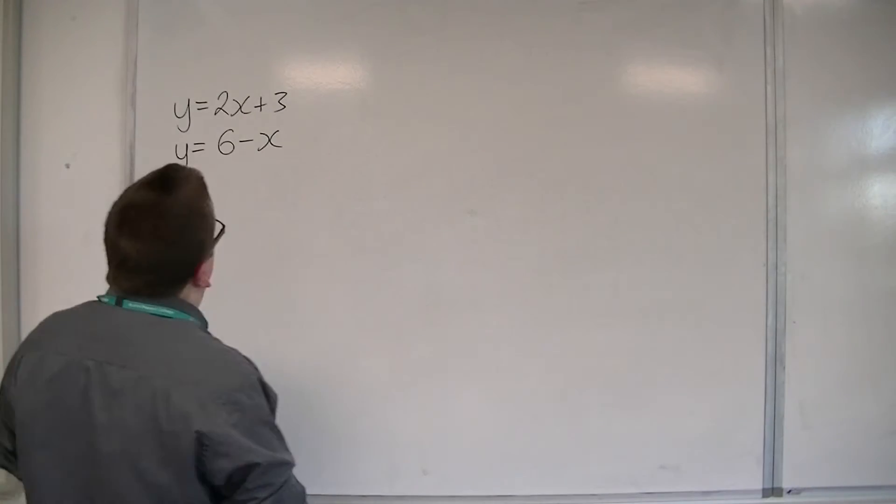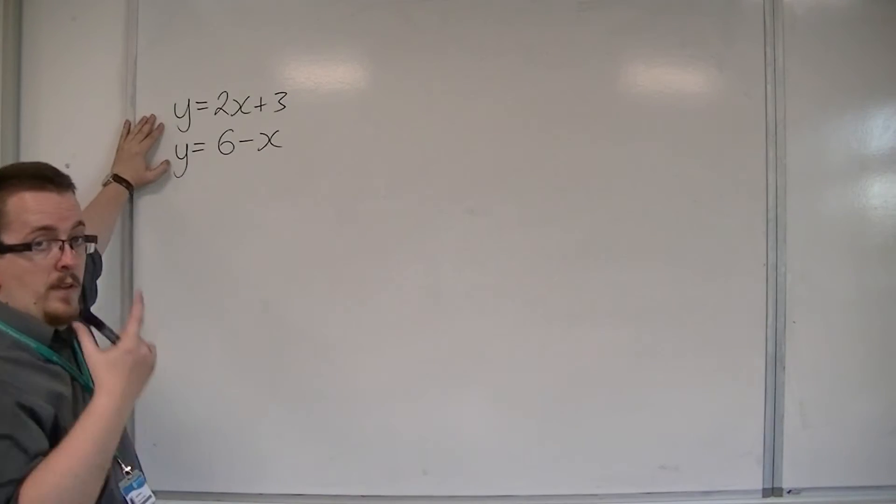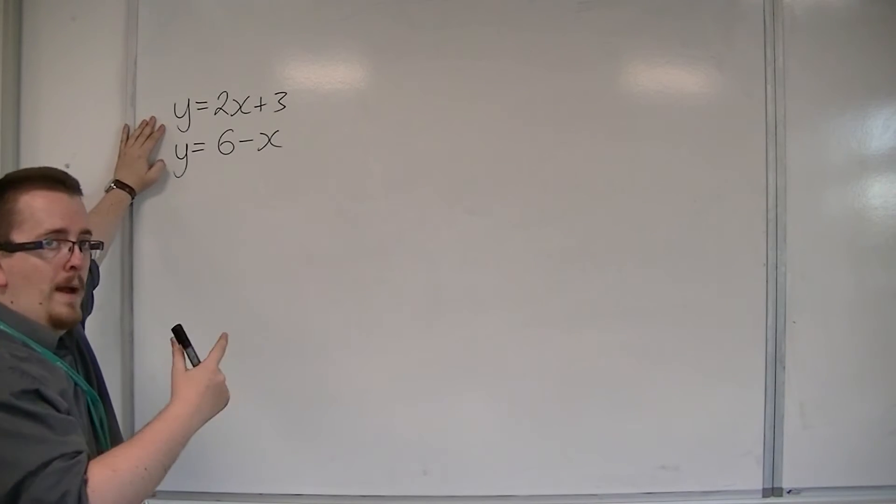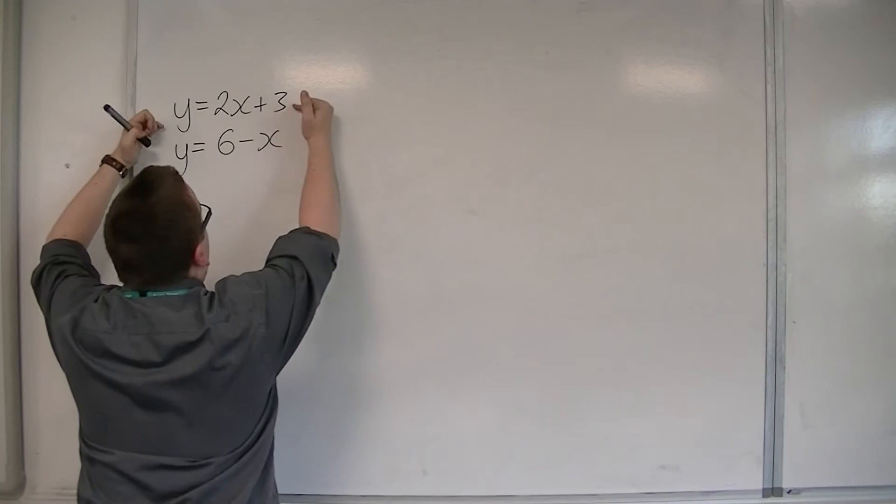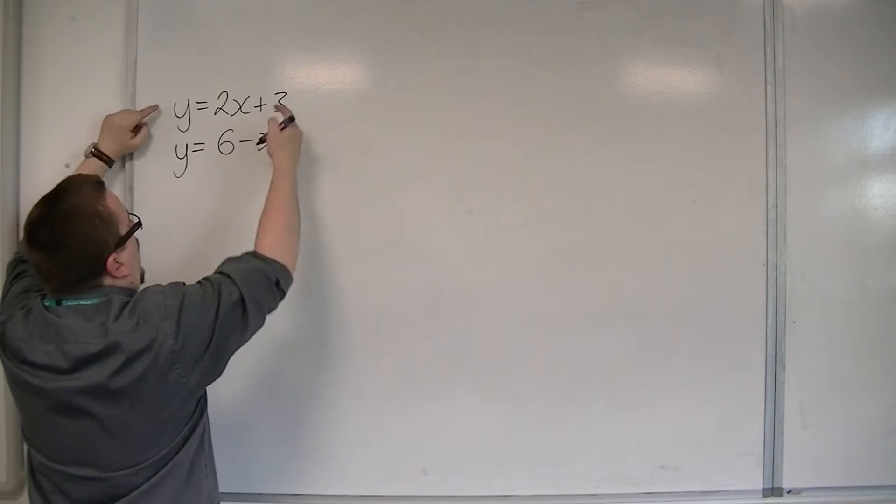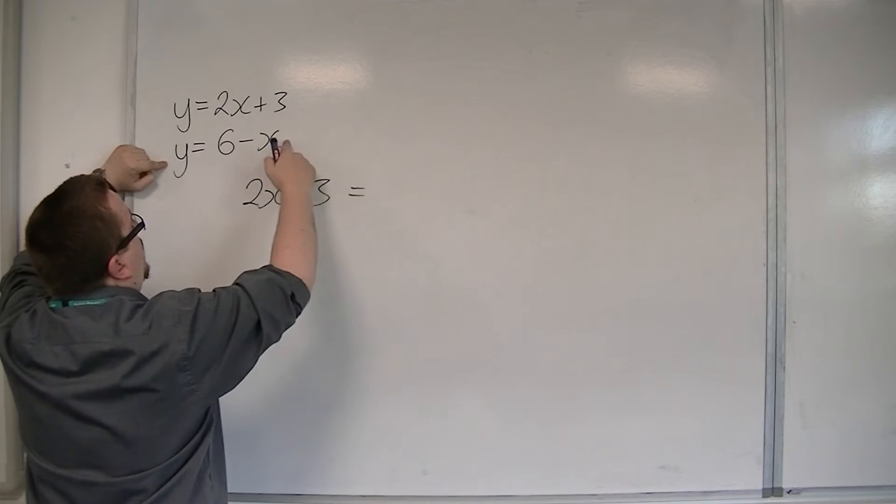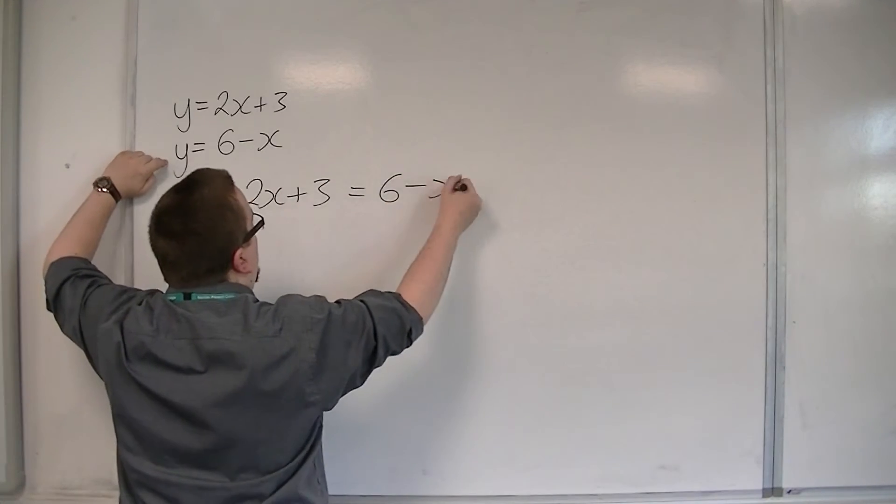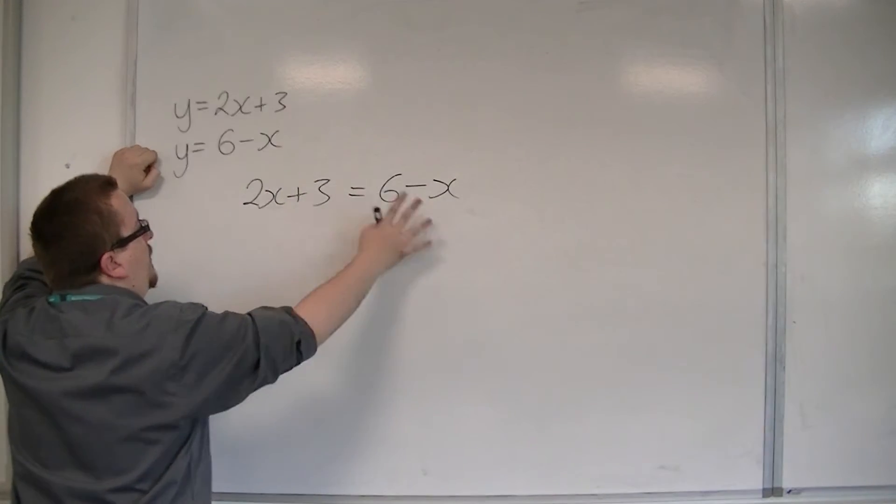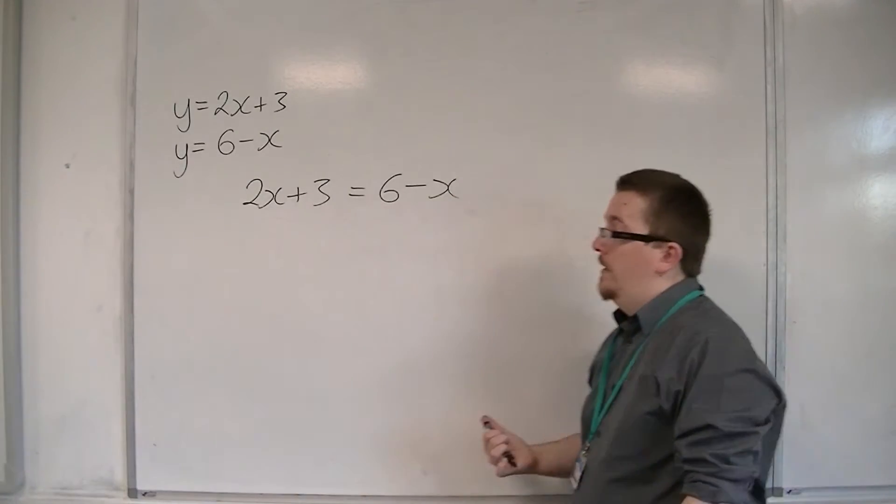The easiest way to do it for these equations in this format is to put one equal to the other, because if y is equal to 2x plus 3 and y is equal to 6 minus x, then both of these y's have to be the same. So, both of those have to be the same as well.